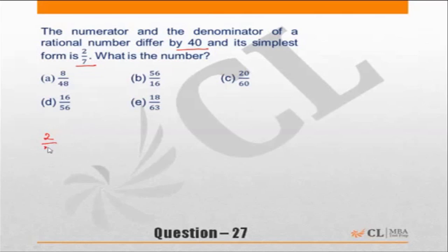The simplest form is 2 by 7 and the difference between the numerator and the denominator is 40. Let's look at this question in a couple of different ways.